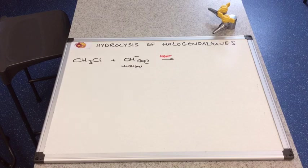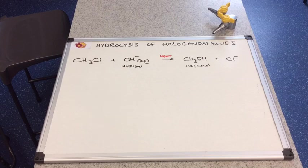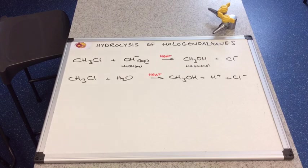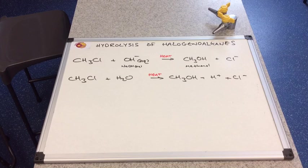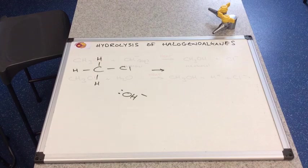So again, before I show you the answer, have a think about what the products would be of this substitution reaction. I'm sure you got that perfectly right. So of course the alcohol produced from chloromethane would be methanol and the halide ion would be chloride. And just for completeness sake, there's the equation for the hydrolysis using water.